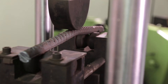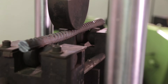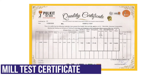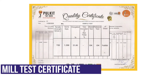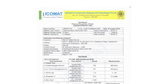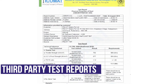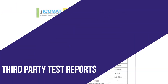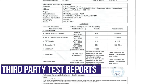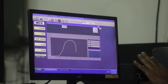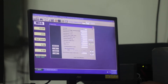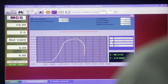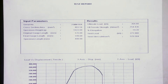The manufacturer usually does these tests and the mill test certificate is attached to every batch that is tested. These reports are available with the wholesalers and retailers.